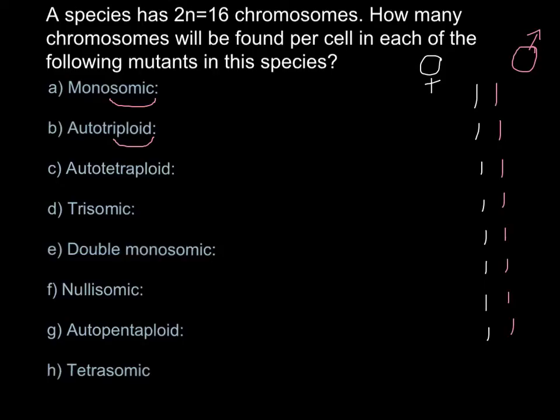Question A: Monosomic. This question is about number of chromosomes, and it means that we are missing one chromosome — it can be any chromosome, for example from the female side. This condition gives us 16 minus 1 = 15 chromosomes. So 15 is the correct answer for Question A.